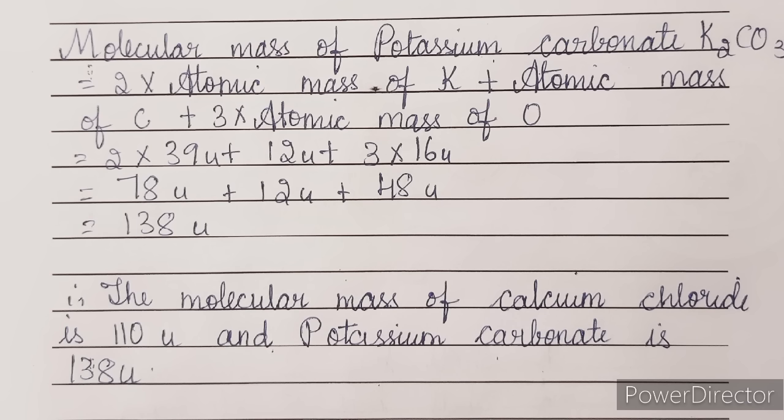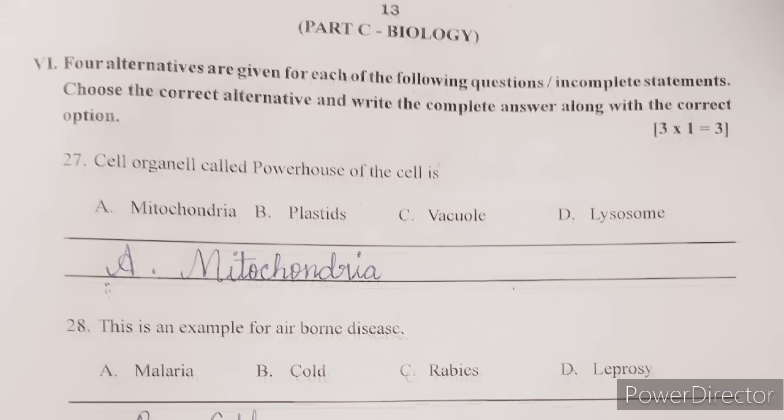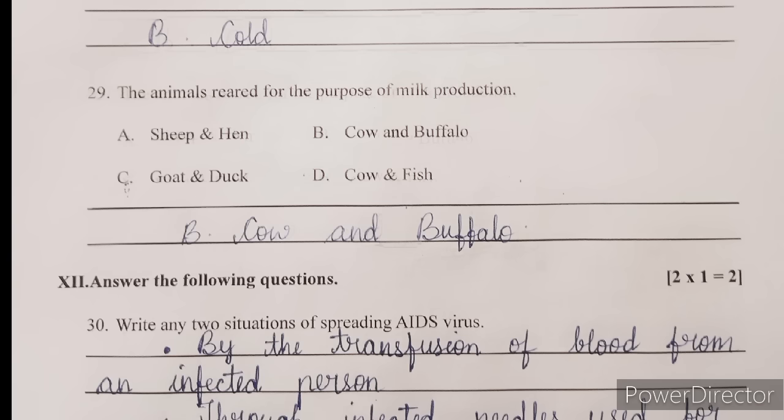Next part is biology. Again, we have multiple choice questions. Question 27: the cell organelle called the powerhouse of the cell is — answer: mitochondria. Next question: an example of an airborne disease is — answer: cold. The animals reared for the purpose of milk production — answer: cow and buffalo.